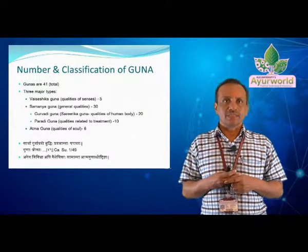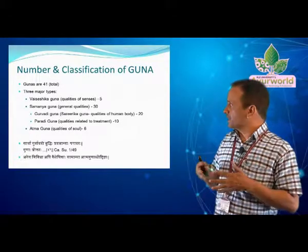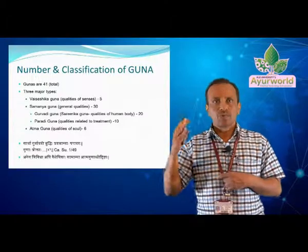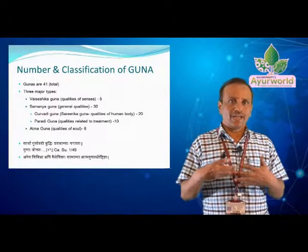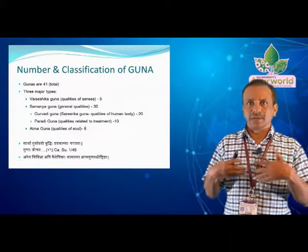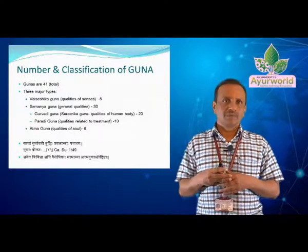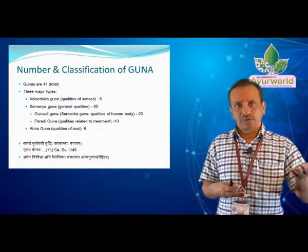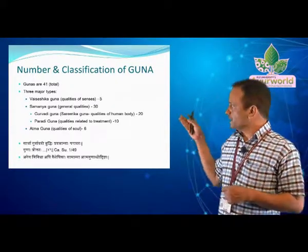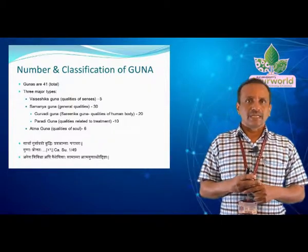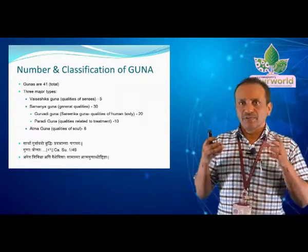Then come the Samanya Gunas, which are 30 — the general qualities of Panchamahabhutas substances. Among them, we can see Guruvadi Guna and Paradi Guna. These Guruvadi Gunas — Guru, Mandha, Himasakalak — there are 20, which are similar to the human body. These Gunas are present in outside substances. Which are similar, we are calling them as Shadirika Gunas, or qualities of the human body, which are also present in the Loka or the outside world, which we utilize in our therapy.